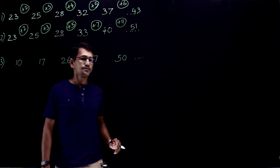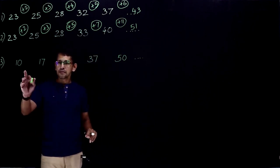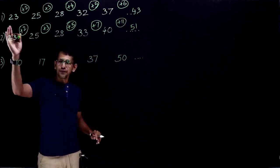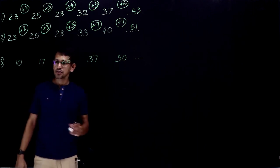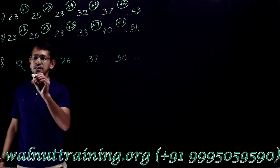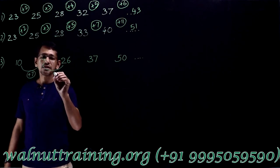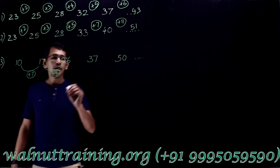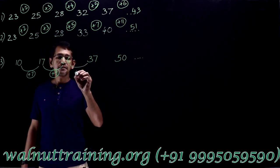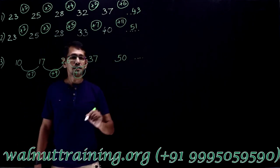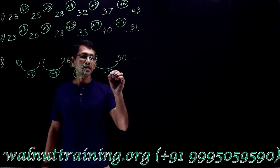Naturally, the difference method would come to our mind. This is 10 plus 7 is 17, right? 17 plus 9, that is 26. And 26 plus 11 is 37. And 37 plus 13 is 50.